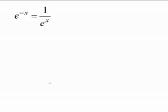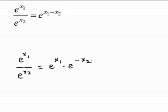Another very important law of exponents is e to the negative x is equal to 1 over e to the x. We can clearly rewrite that as e to the x equals 1 over e to the negative x. Both identities hold true.